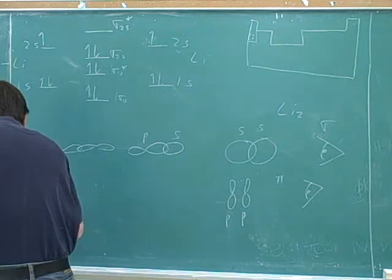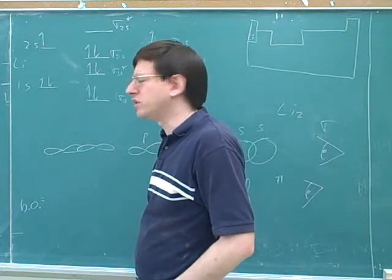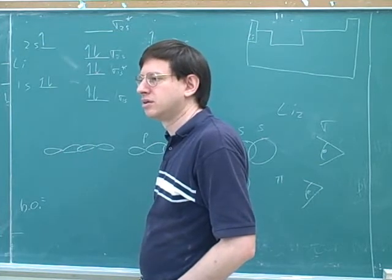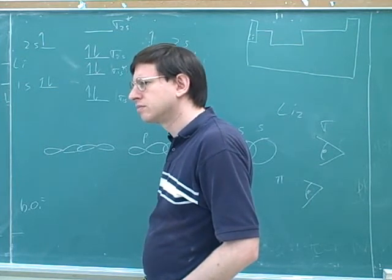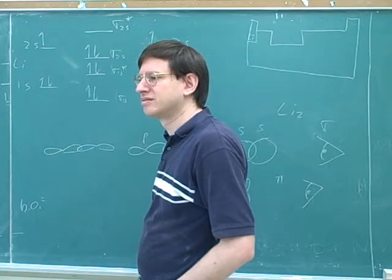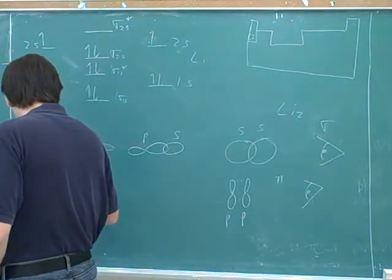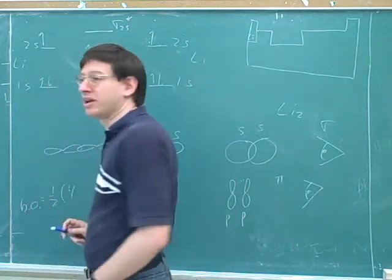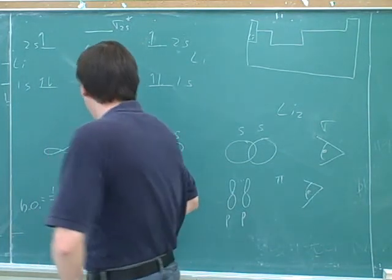Let's figure out what the bond order would be. For the bonding orbitals, you would use the regular sigma ones without the star. How many electrons are there in the bonding orbitals? Four — one, two, three, four. And how many electrons are in the anti-bonding orbitals? Two. So we get a bond order of one.